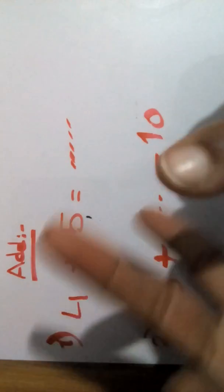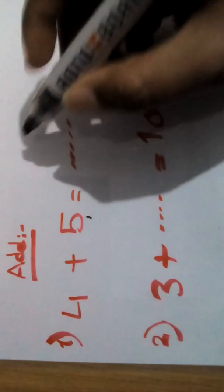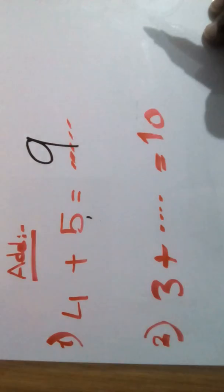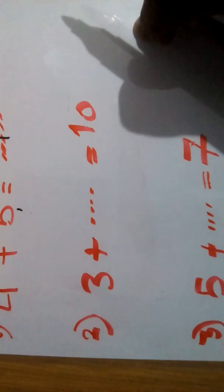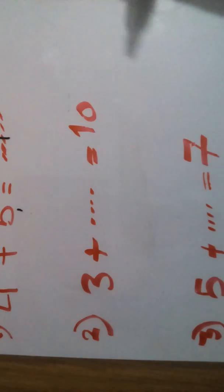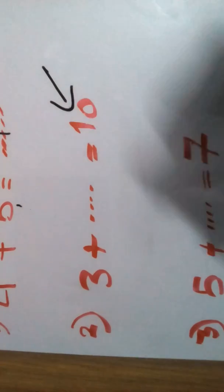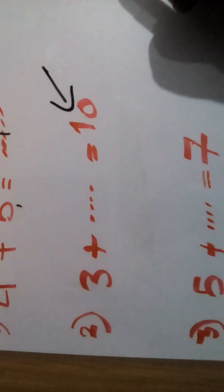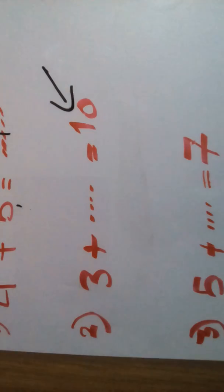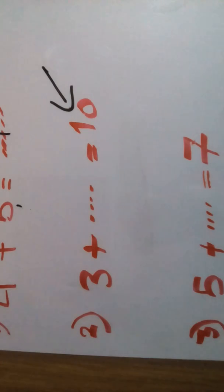Count after 5: 6, 7, 8, 9 — the answer is 4. Now, 3 plus what equals 10? If you have a missing number, you must search for the biggest number. In addition, the biggest number comes after the equal sign — the biggest number here is 10.